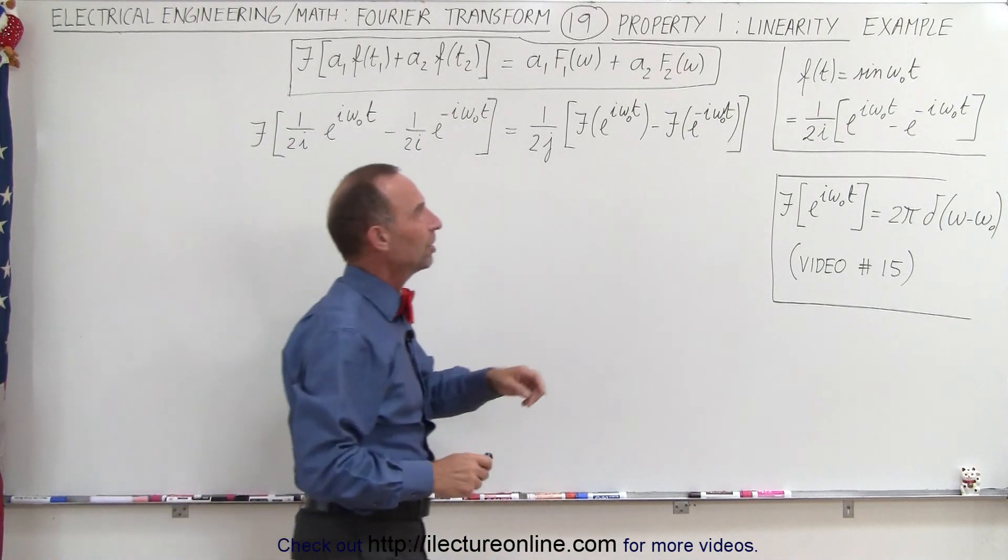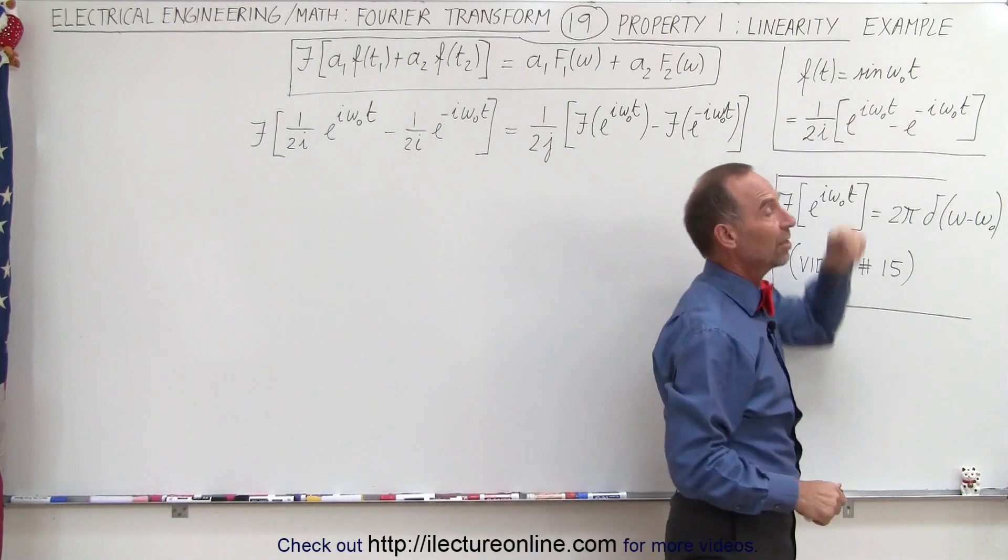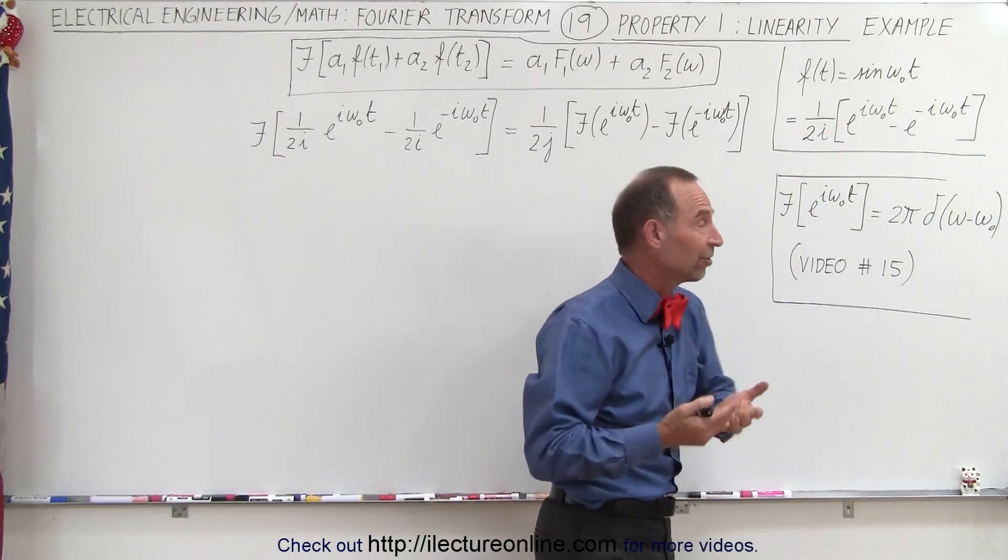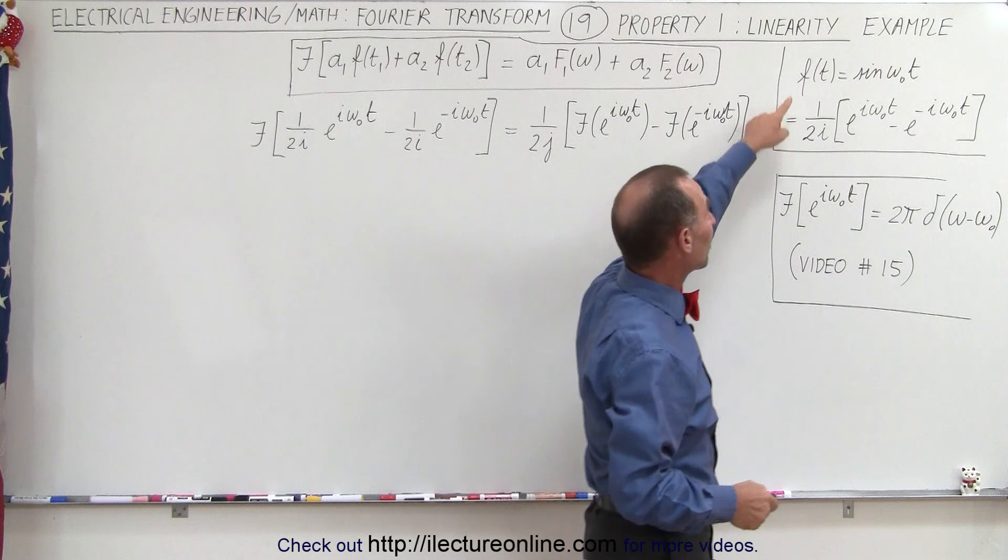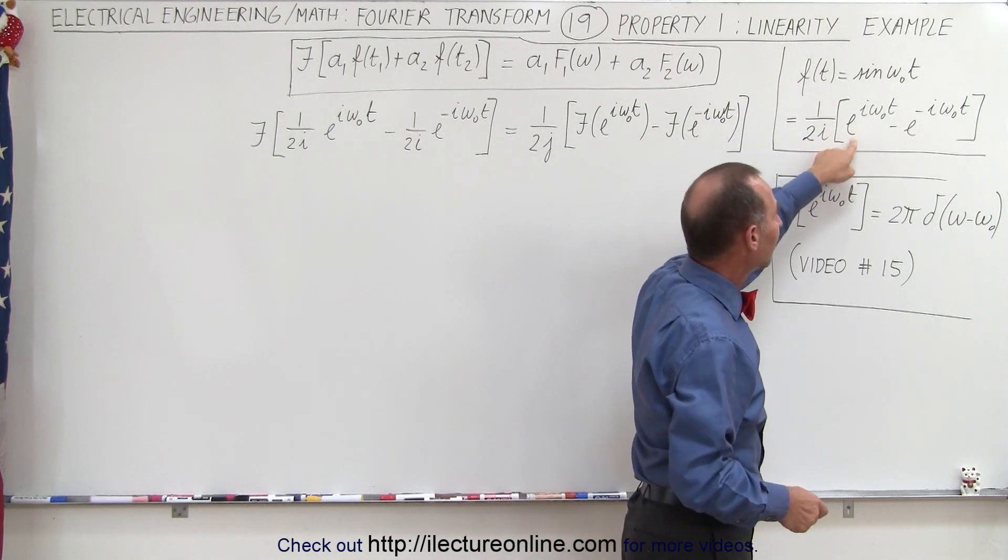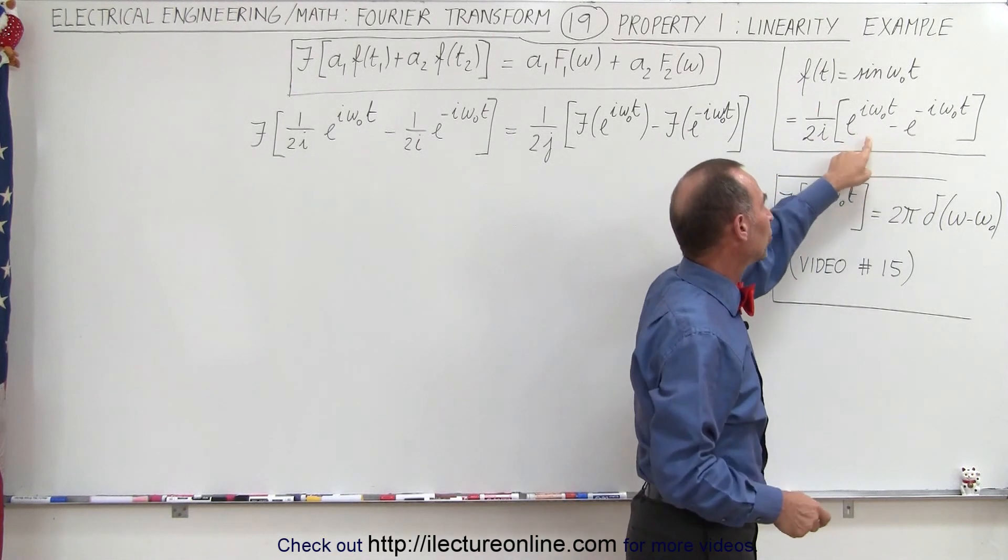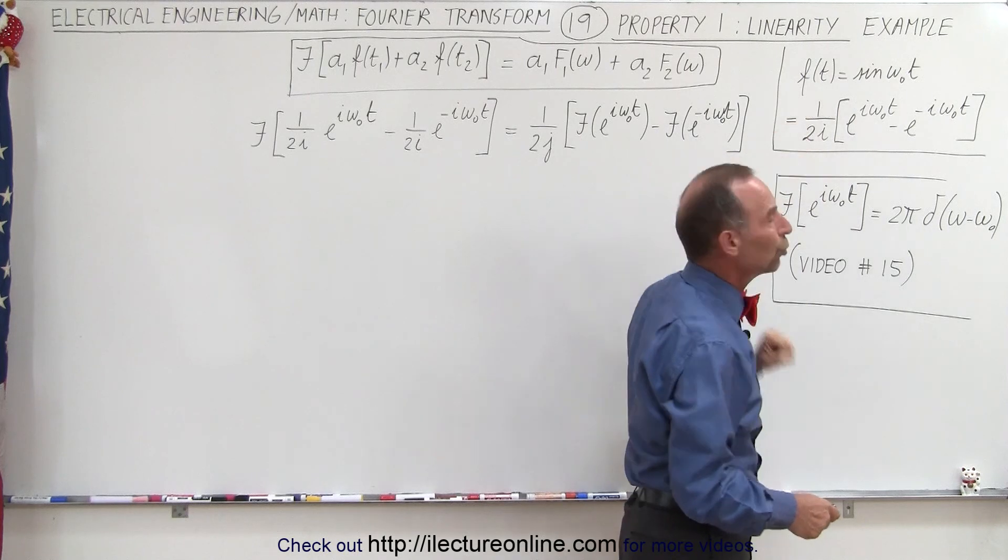Now what is the input function? It's the sine of omega naught t. At first you may say that's only a single input function, but if we rewrite that function in this format, you can see it becomes two separate functions, each multiplied by 1 over 2i.